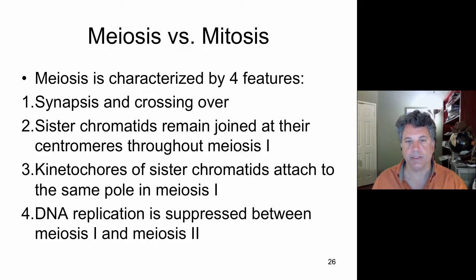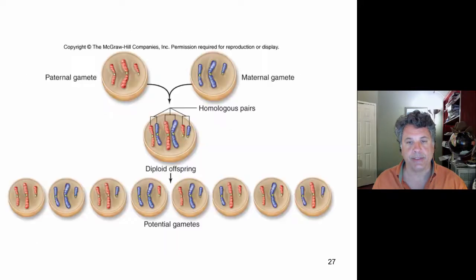Now let's look at what types of variability can be generated in terms of the gametic inheritance of chromosomes. So if we have a paternal gamete with three red chromosomes and a maternal gamete with three blue chromosomes, that results in a diploid genotype with three pairs of chromosomes. Given this arrangement, what are the combinations of those chromosomes that can end up in potential gametes? If we have three different pairs of homologous chromosomes, we can generate two to the third or eight different possible combinations.